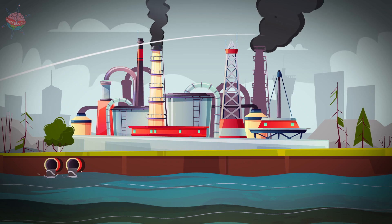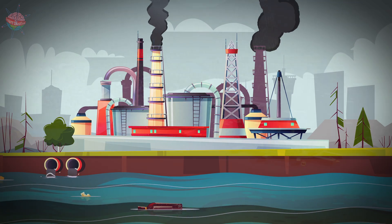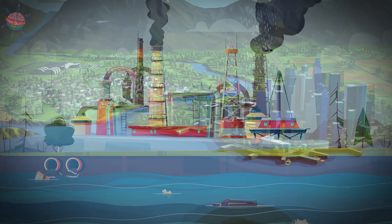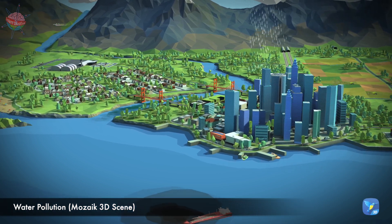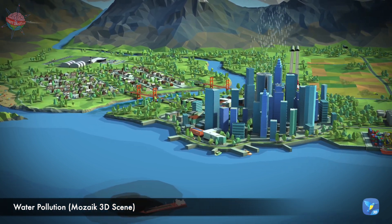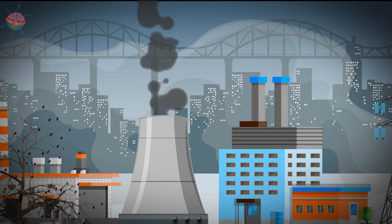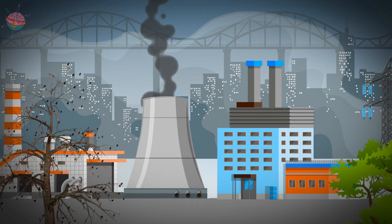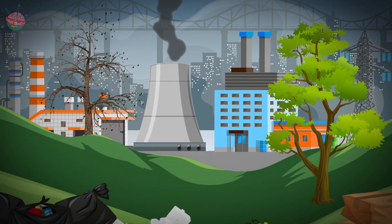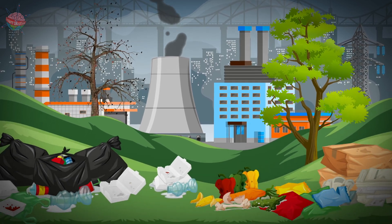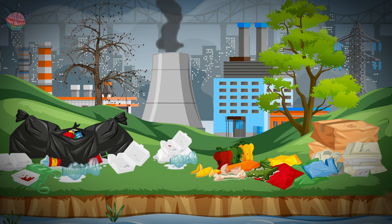Water pollution refers to the polluting of the Earth's water bodies — oceans, seas, lakes, rivers and underground waters — caused by human activity. Pollution is a change in the physical, chemical or biological properties of water, which has a harmful impact on the flora and fauna.